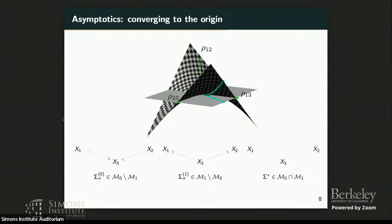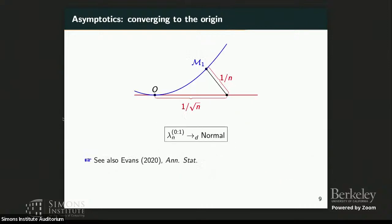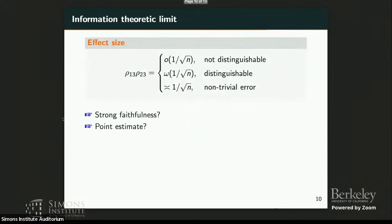But the more interesting one is where your sample distribution is in the vicinity of the origin. Now, if you do that, the strange behavior is that if you are √n away from the origin, actually, you get 1/n away from one model to the other. Okay, what this implies is that even if your effect size as measured by this distance from the origin is √n away, you cannot differentiate between the two models.